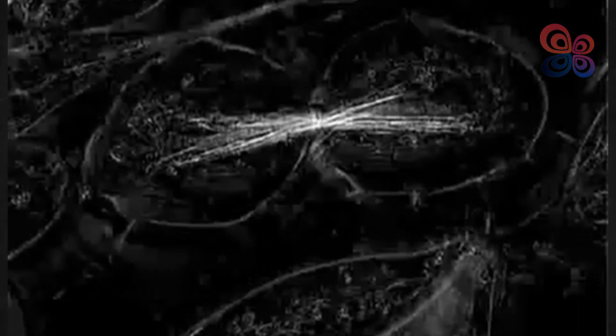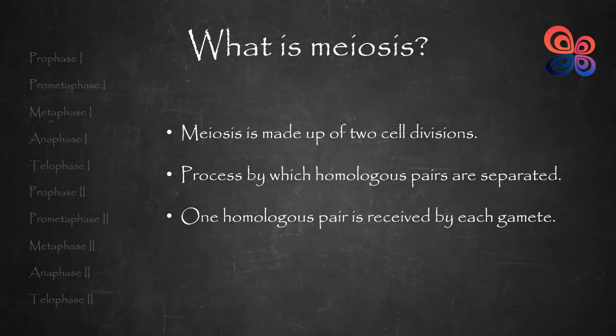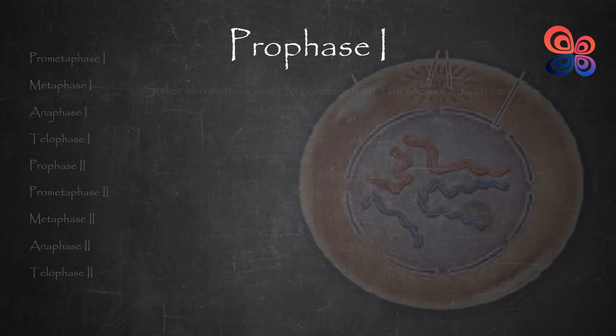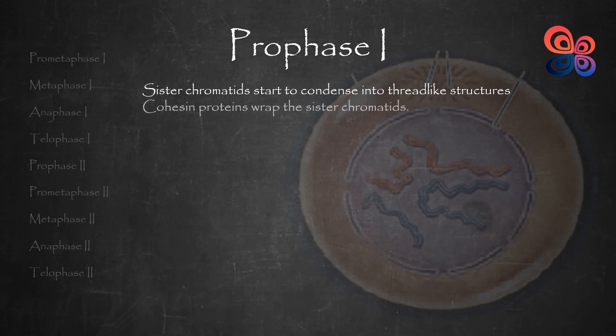So, what happens in meiosis? The replicated chromosomes, each made up of two identical sister chromatids, start to condense into thread-like structures at the start of prophase 1. Similar to mitosis, sister chromatid cohesion, in which cohesin proteins wrap the sister chromatids throughout their length, securely holds each pair of sister chromatids together.